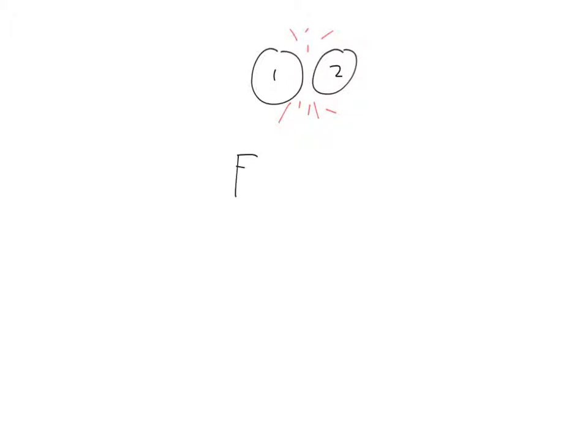We're going to have these two balls smash into each other, and so there's going to be a pair of forces. Let's call this ball 1 and ball 2. We know that there's going to be a force of ball 1 on 2, and there'll be a force of ball 2 on 1. We know from Newton's third law that these two forces should be equal but in opposite directions.